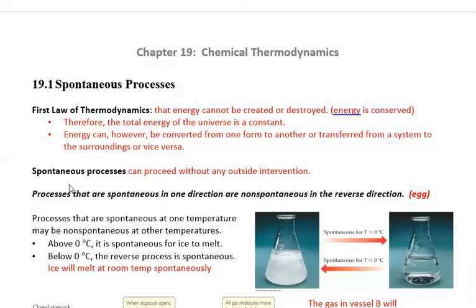Spontaneous processes can proceed without any outside intervention. If something is spontaneous in one direction, it's going to be non-spontaneous in the reverse direction. And some of these processes will be temperature-dependent. For example, if you're looking at water, water can freeze spontaneously at cold temperatures, but at room temperature, it would melt. So if you took an ice cube and you put it out on your desk, it's going to melt spontaneously. If you took a bottle of water and you put it in the freezer, it's going to freeze spontaneously at that temperature. So you don't have to do anything else to make it happen. Once you set the temperature, then it will freeze or it will melt, depending on what it is.